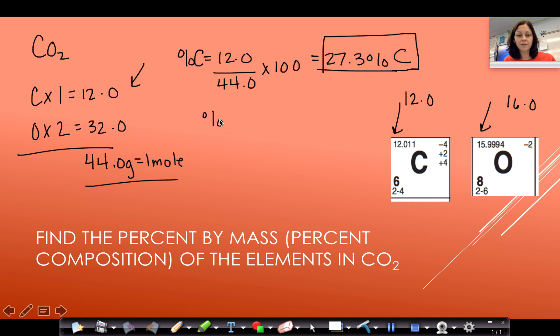If I want my percent of oxygen, I take the number that was the mass of the oxygen, my 32.0. I put it over my total mass, which was the 44.0, and I multiply by 100. My total percent comes out to 72.7%, which makes sense because 27.3% carbon plus 72.7% oxygen gives us a total of 100%.